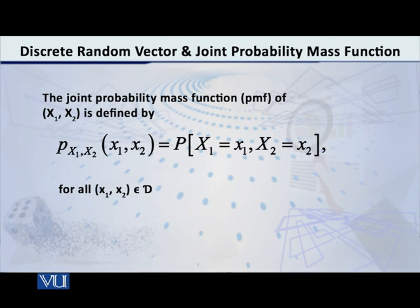Now, there are two very, very important and basic fundamental properties of joint probability mass function, which I have just now defined for you. The properties are as follows.